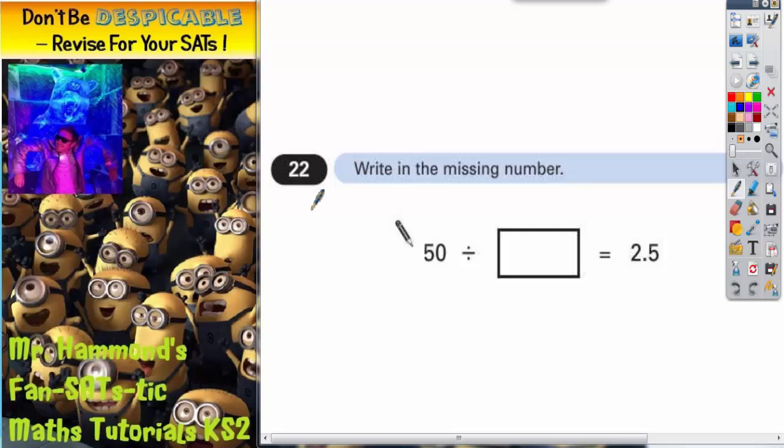Well, we could do this by trial and improvement, but it could take us forever to find the correct answer. So the easiest thing to do is to take this decimal point out to begin with and make ourselves a new calculation.